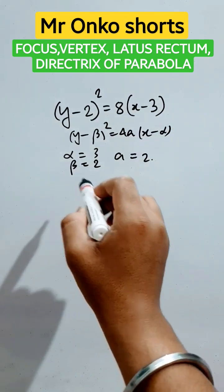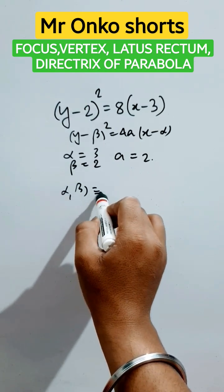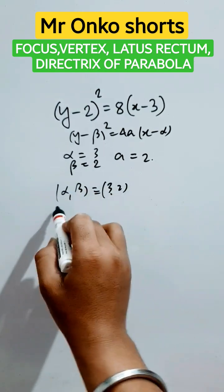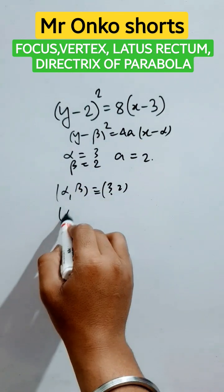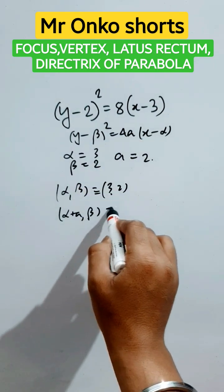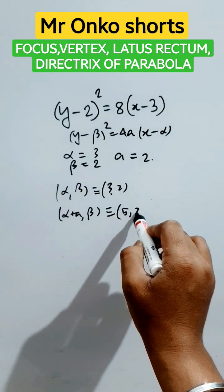So here first the vertex will be (α,β), that is nothing but (3,2). Now the focus will be (α+a, β). It will be 3 plus 2, that is (5,2).